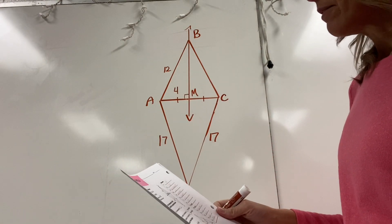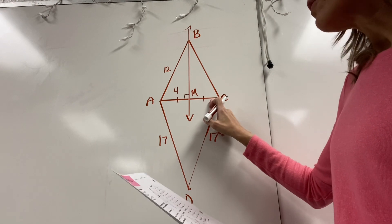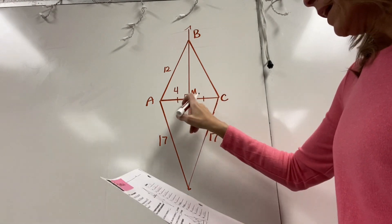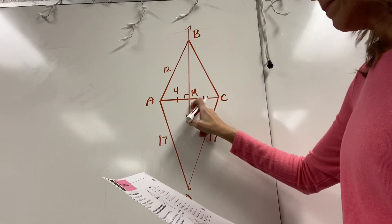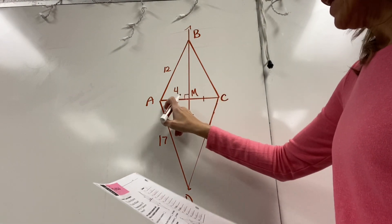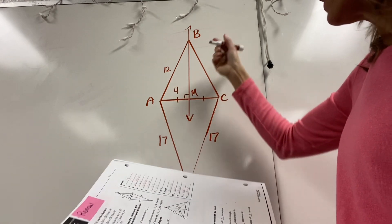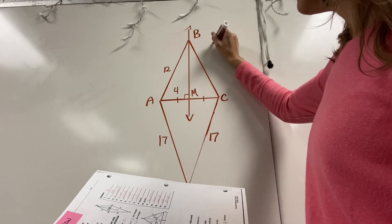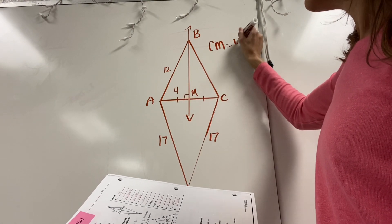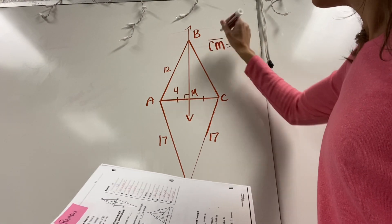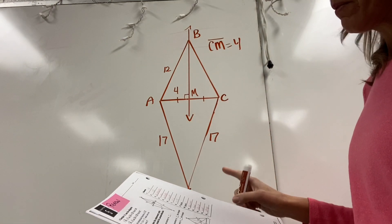Number one says find CM. If they've told me that AM is congruent to CM, and AM equals four, then CM must also equal four. So that's answer number one: four.